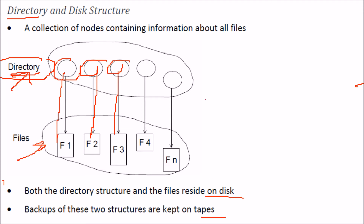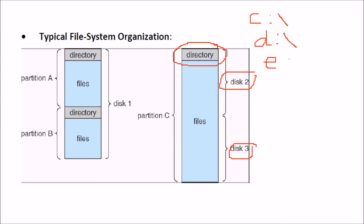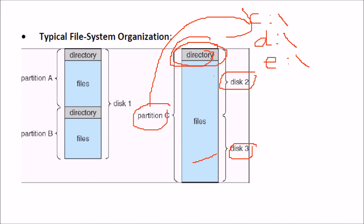Both the directory structure and the files are found on the disk. If you want more backup, you can go to some tape drives. This is a typical file system organization. You can have different disks and put files inside directories. You might have seen in Windows partitions like C:, D:, E: — multiple disks which can contain directories apart from files.